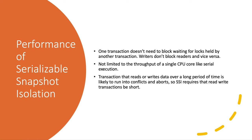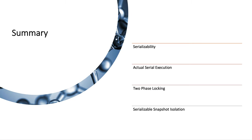Comparing the performance of serializable snapshot isolation: the big advantage over two-phase locking is that a transaction does not need to block waiting for locks held by another transaction. Like snapshot isolation, writers don't block readers and readers don't block writers. Its performance is also not limited to the throughput of a single CPU core like serial execution. However, transactions that read or write data over a long period of time are likely to run into conflicts and aborts, so SSI requires that read-write transactions should be short.